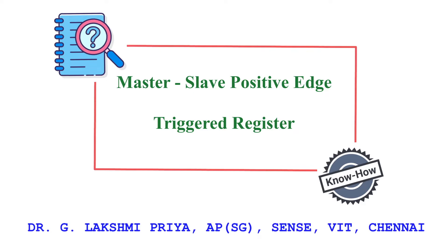In general, registers are edge-triggered memory elements. The input is sampled only on a clock edge. If sampling is done at the rising edge of the clock, which means from 0 to 1 transition, it is called a positive edge-triggered register. If the sampling is done at the falling edge, which means from 1 to 0 transition of the clock, it is a negative edge-triggered register.